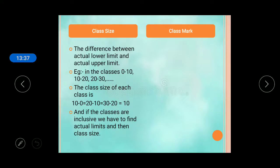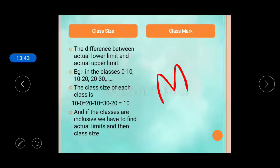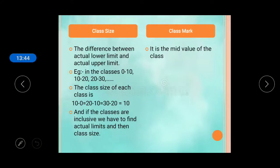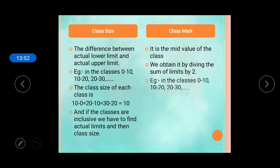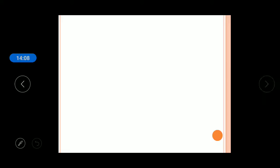Class marks are the mid value of a particular class. You obtain the class mark by adding the two limits and dividing by 2. For example, the class mark of 10 to 20 is (10 + 20) / 2 = 15. So 15 is the mid value or class mark for that class.